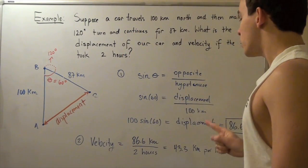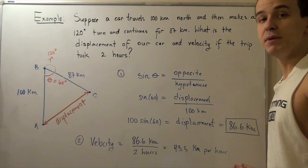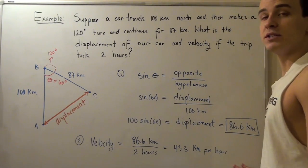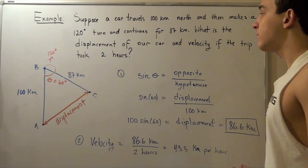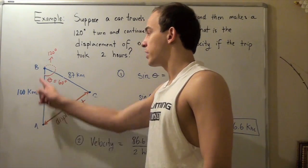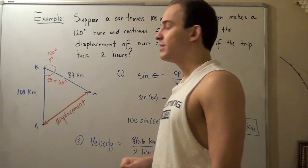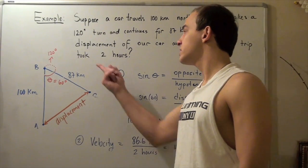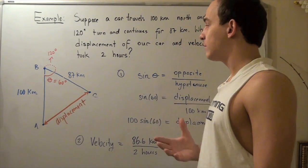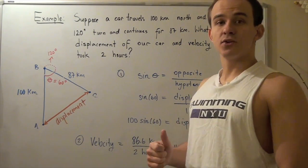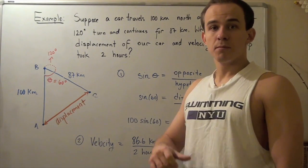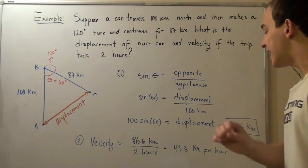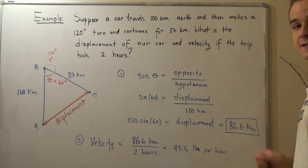Notice that this is not the same thing as our speed. Our speed, if we want to find it, we have to take our total trip, so it's 187, and divide that by our total time, which is 2, and that gives us 93.5 kilometers per hour. That's not the same thing.